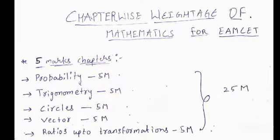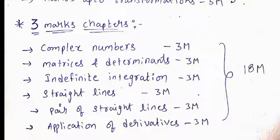First of all, five-mark chapters: that are probability, trigonometry, circles, vector, ratios up to transformations. So from these five chapters you will get total 25 marks.